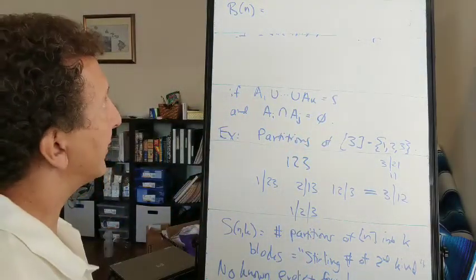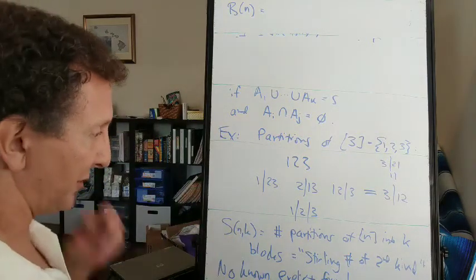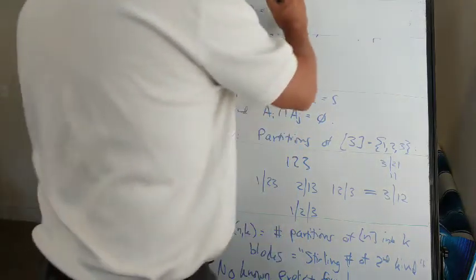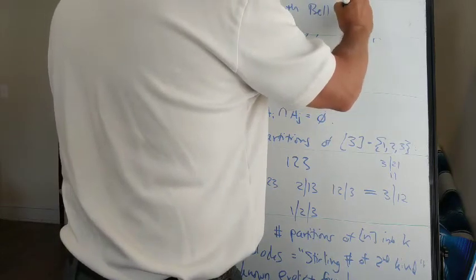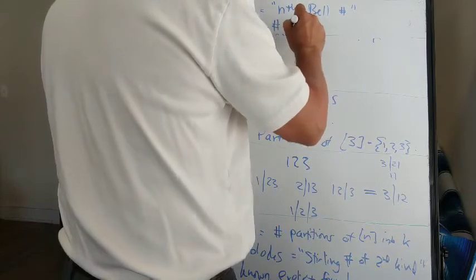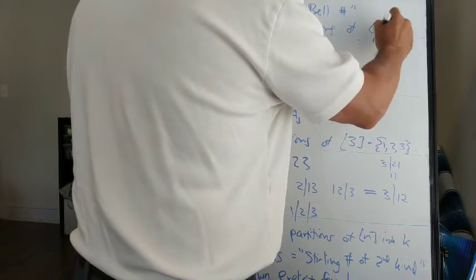So you might think that maybe there's a formula for the total number of set partitions if we don't worry about how many blocks. And that's usually written B(n). It's called the nth Bell number. And that's the number of partitions of the set 1 through n.